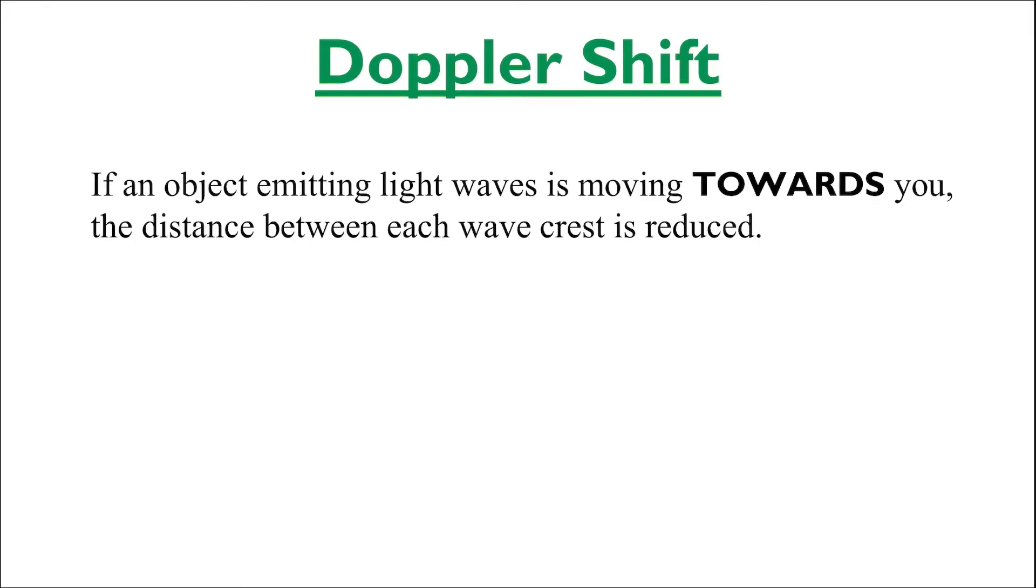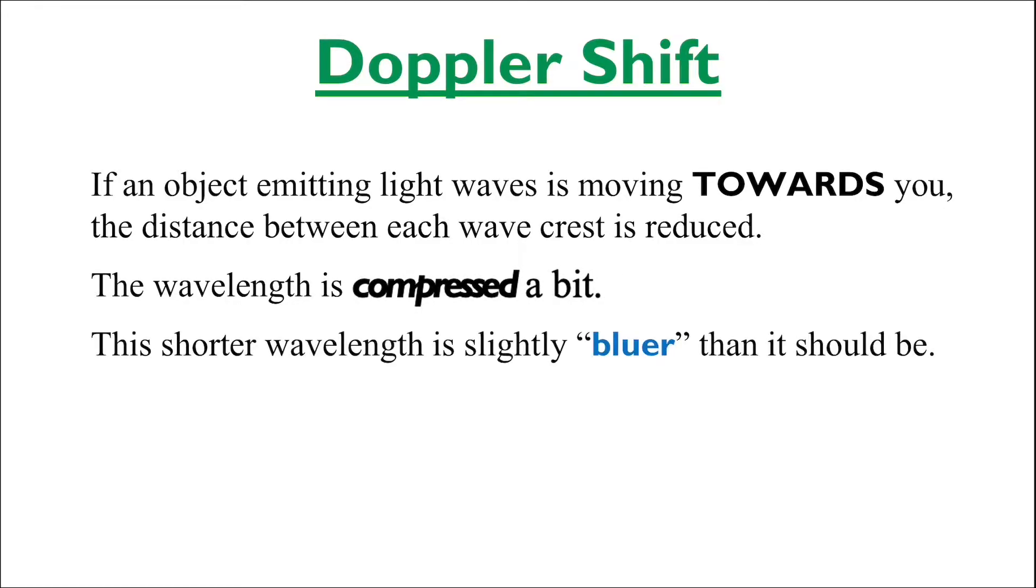This is what we call the Doppler shift. If an object emitting light is moving towards you, the distance between each wave crest is reduced. So, as a result, the wavelength is compressed a little bit. This shorter wavelength is slightly bluer than it should be, so we call such light blue-shifted light.